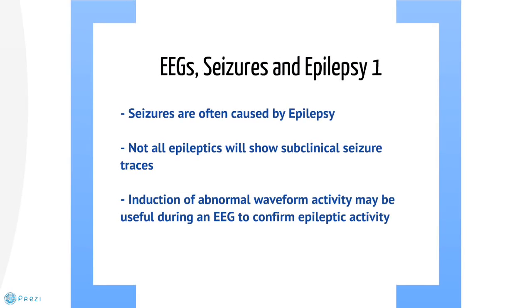One of the main uses of an EEG is to look for epileptic brain activity, which can manifest as spike-and-wave, sharp waves, or unusually slow waves on the EEG trace. An epileptic seizure is characterized as abnormal, excessive or synchronous neuronal activity in the brain. EEGs can be used to help confirm an epilepsy diagnosis, as up to 90% of epileptics will show abnormal waveforms in their EEGs between seizures, known as subclinical seizures.